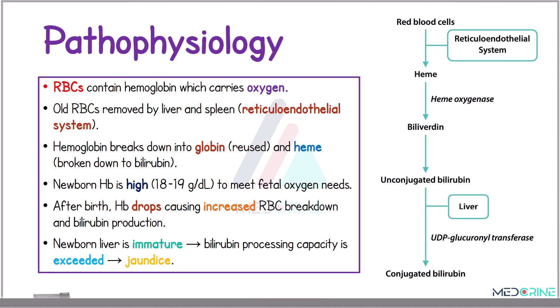Newborns are known to have higher hemoglobin levels of between 18 to 19 g/dL so that they can meet the fetus's oxygen demands. After birth, hemoglobin levels drop, causing increased red blood cell breakdown and bilirubin production. Being that these are neonates, the newborn liver is immature; therefore the bilirubin processing capacity of this liver is exceeded, causing excessive accumulation of bilirubin, known as jaundice.